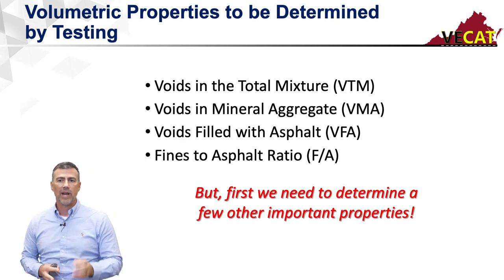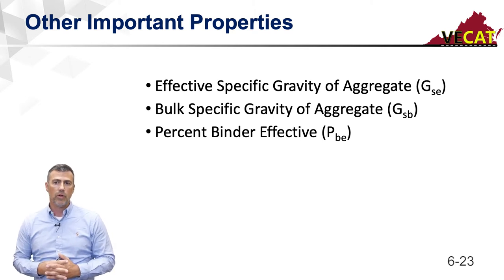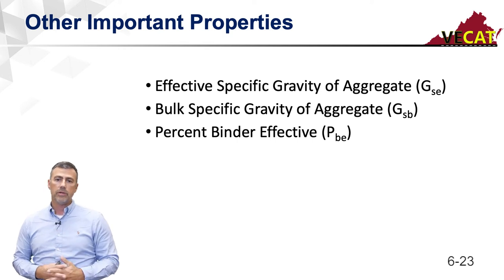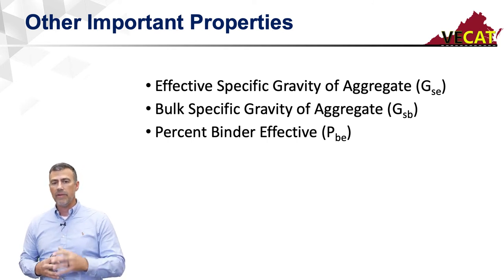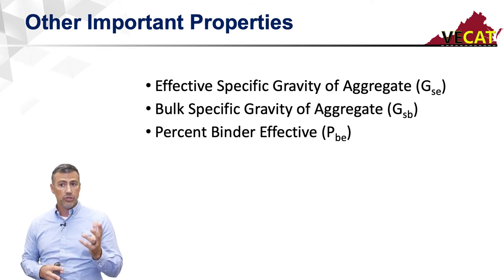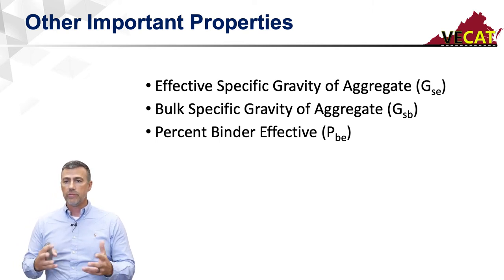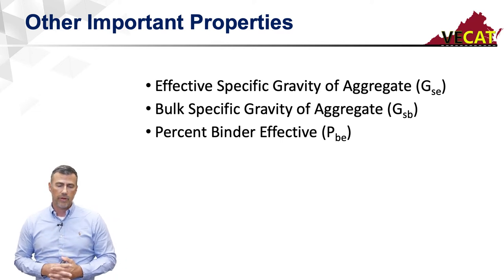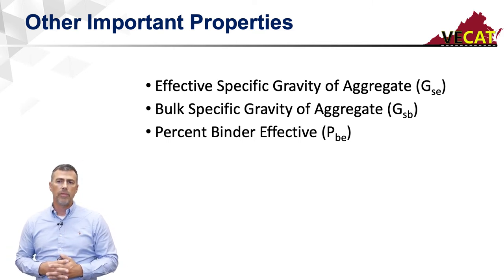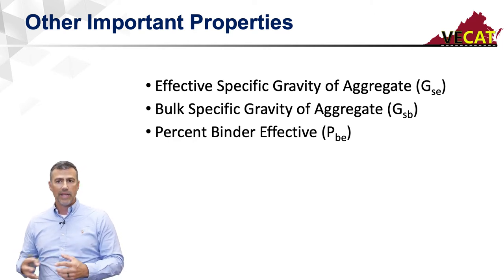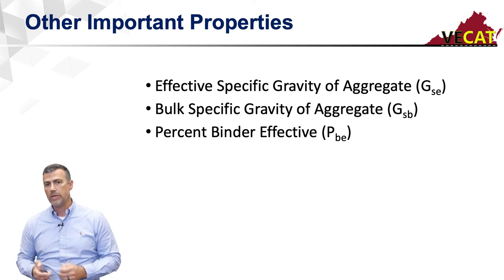To be able to calculate these, we're going to have to talk about some other properties as well. Those three values are: the effective specific gravity of the aggregate, GSE — G is gravity, S stands for the stone, E is the effective specific gravity of the stone. The next term is the bulk specific gravity of the aggregate, GSB. And then the final property is the percent binder effective, PBe — percent binder, with the little e being the effective percent binder.